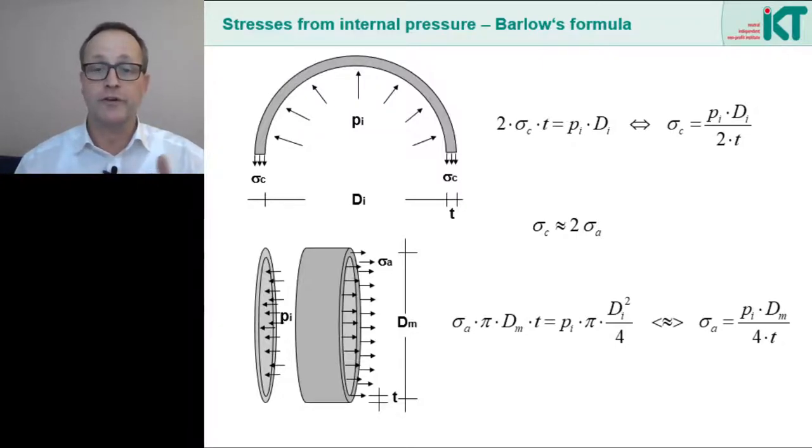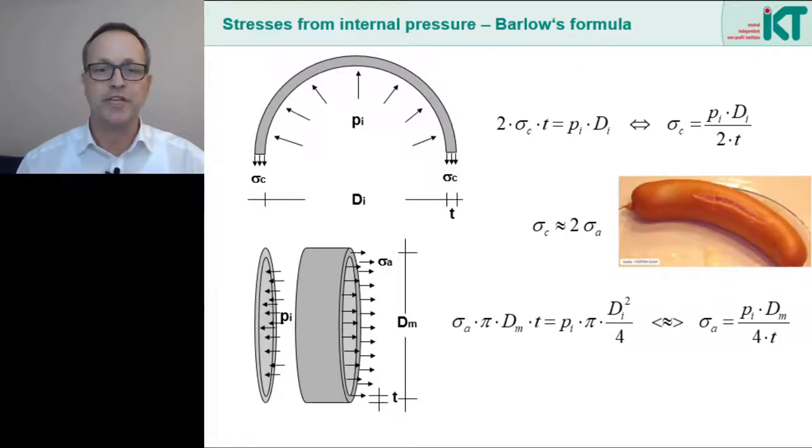By the way, that the circumferential stress is twice as great as the longitudinal stress can also be observed when you put a sausage in the microwave. Under heat the sausage bursts lengthwise. And we now know why. The circumferential tension is twice as great as the longitudinal tension. So the sausage must crack like this. If it were the other way around, the sausage would break in two parts.